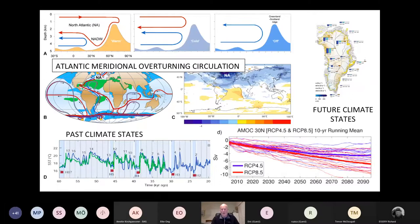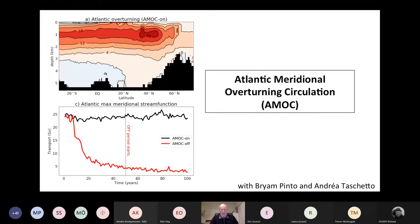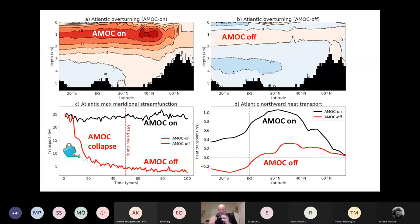So we are expecting the overturning to slow down. The question is, what will that do to the global climate system, apart from cooling the North Atlantic? In this work with one of my grad students, Brian Pinto, and Andrea Taschetto from the CCRC, we did a very simple thing. You take the full-blown coupled climate model and apply melt water. I've got a little watering can here, down the bottom left panel.